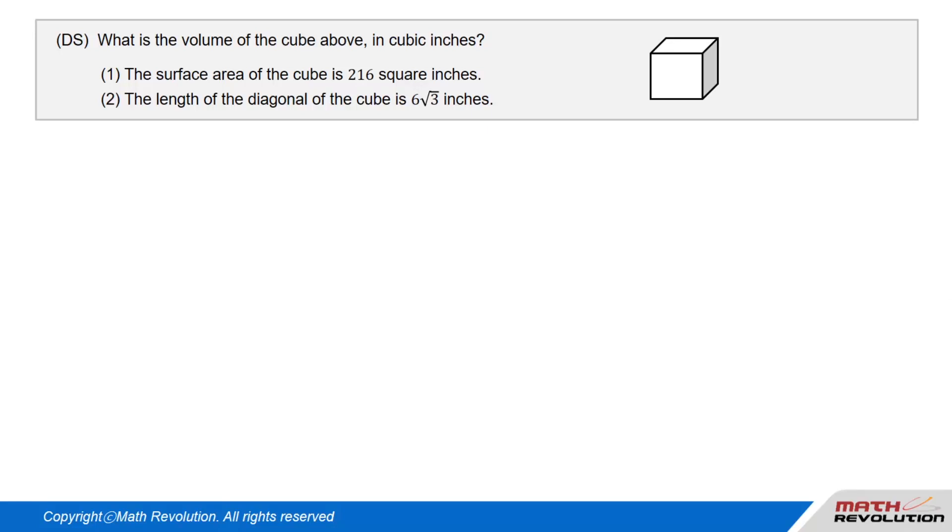Question. DS. What is the volume of the cube above in cubic inches? Condition 1: The surface area of the cube is 216 square inches. Condition 2: The length of the diagonal of the cube is 6 times square root of 3 inches.